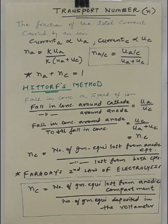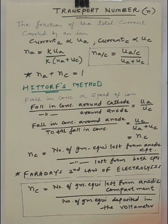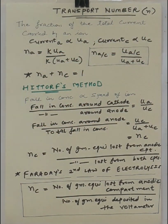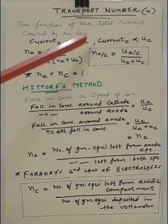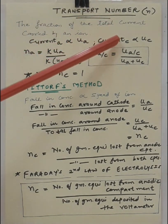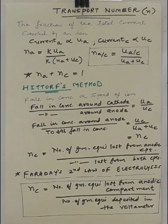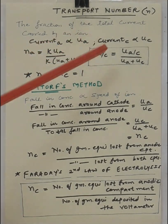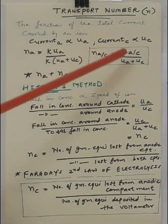Now, let us consider that UA is the speed of anion and UC is the speed of cation. Accordingly I can say the current carried by the anion is directly proportional to UA and the current carried by the cation is directly proportional to UC. So, I can write down the value of transport number as UA upon UA plus UC in respect to transport number of anion. Similarly, I can have the value for transport number of cation.